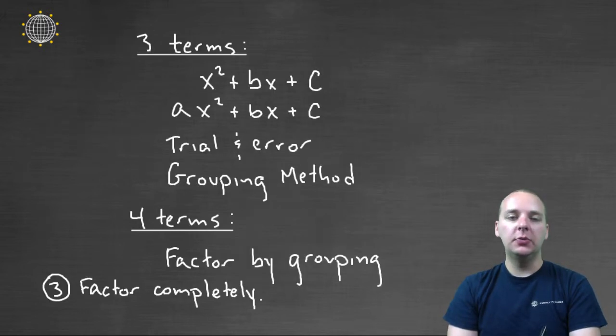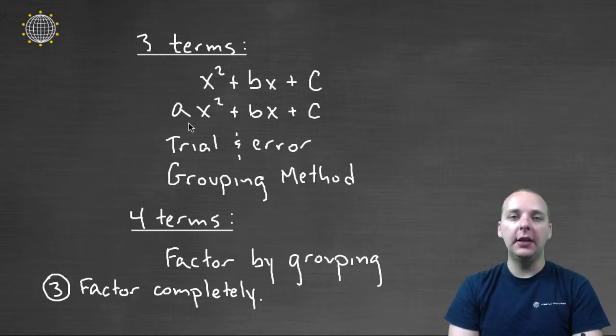Now what if it's three terms? Well, then you have a few different options. It might be like a quadratic trinomial that has a leading value of one, or it might be a quadratic trinomial that doesn't have a leading value of one, or it might not be a quadratic trinomial at all.